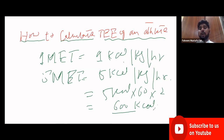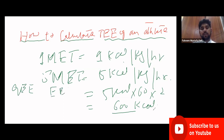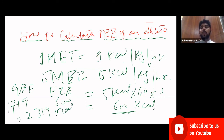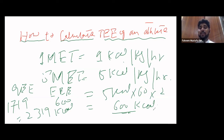We are now done with both parts. General energy expenditure for this athlete is 1719 kcal and exercise energy expenditure is 600 kcal. Total energy expenditure = 1719 + 600 = 2319 kilocalories. This is how we calculate the total energy expenditure of an athlete. If you have any questions, ask in the comment section — thanks for watching!